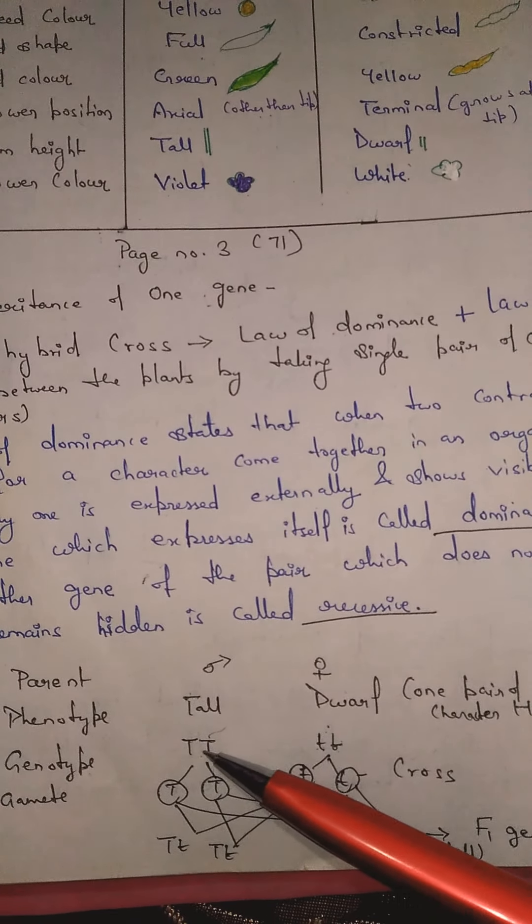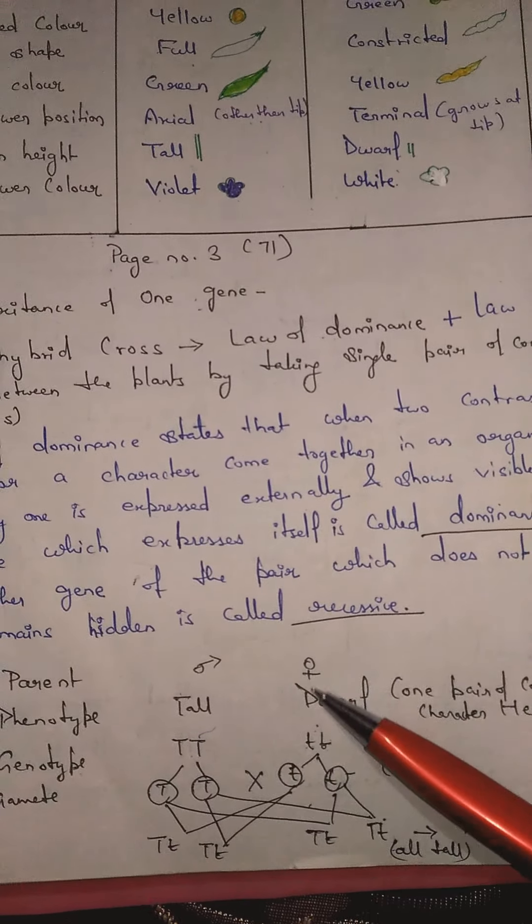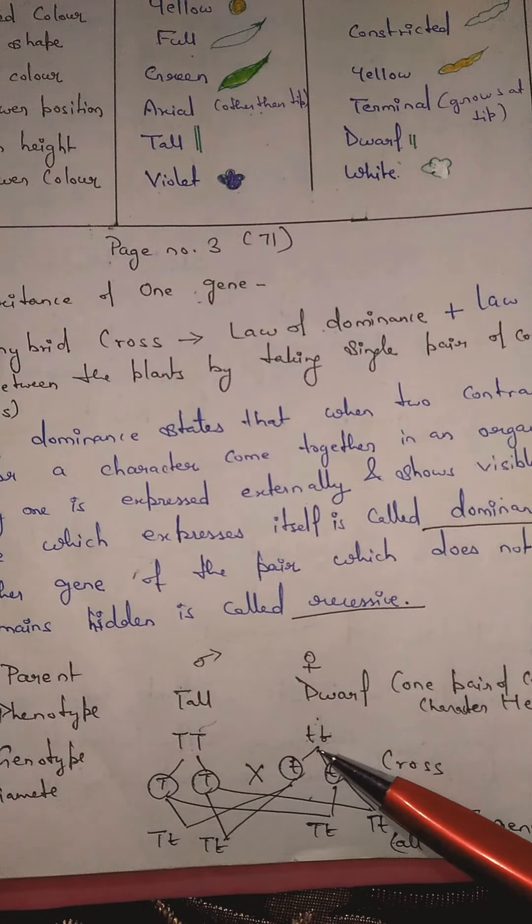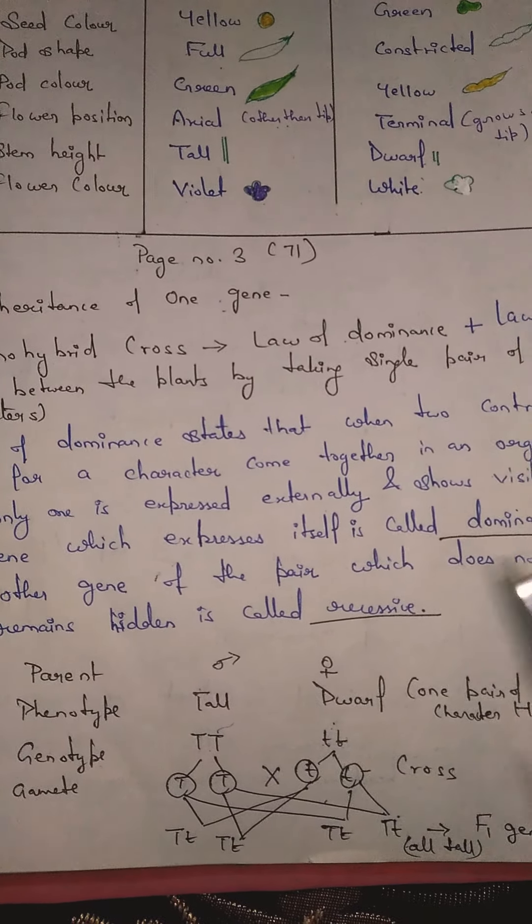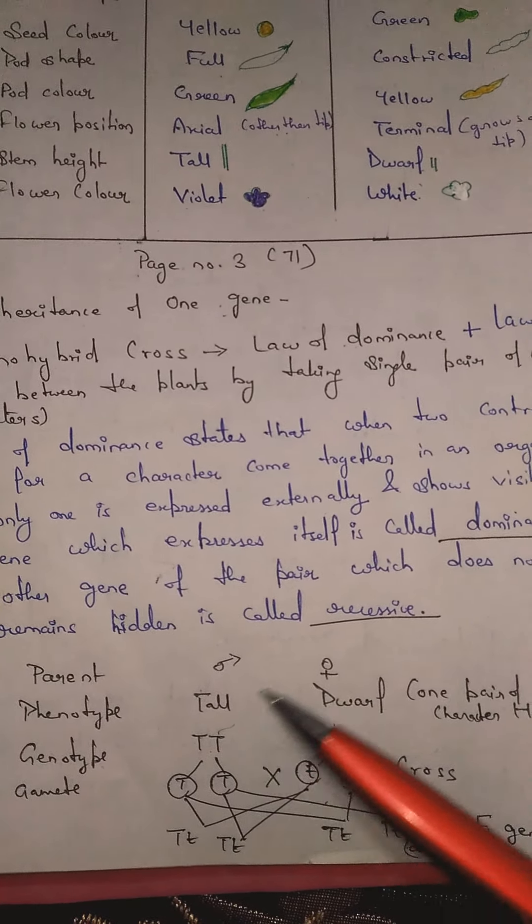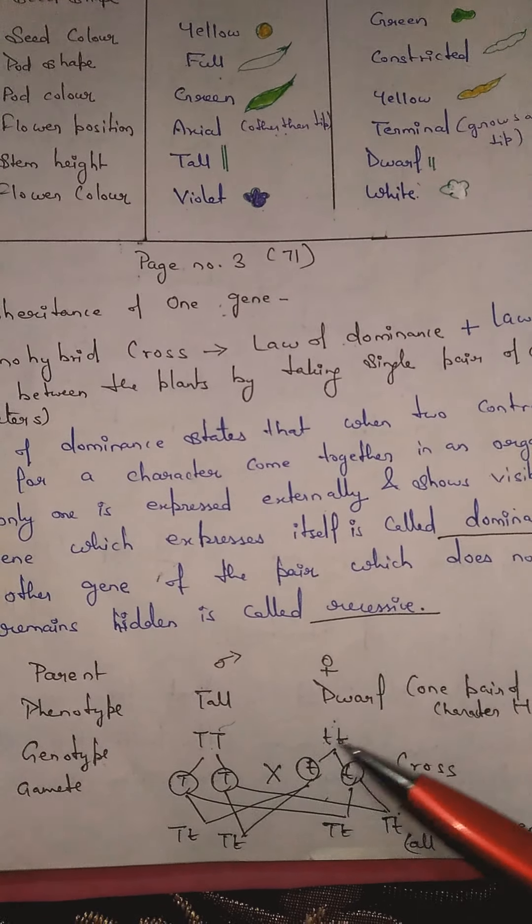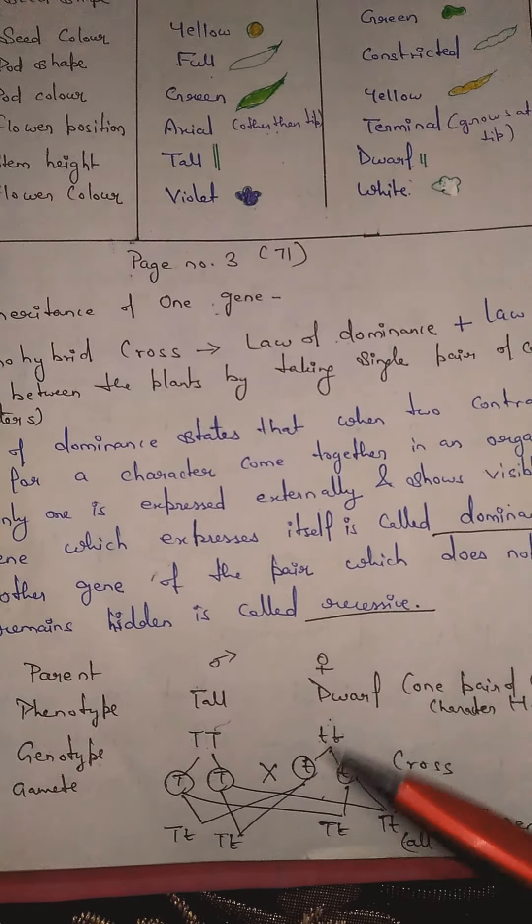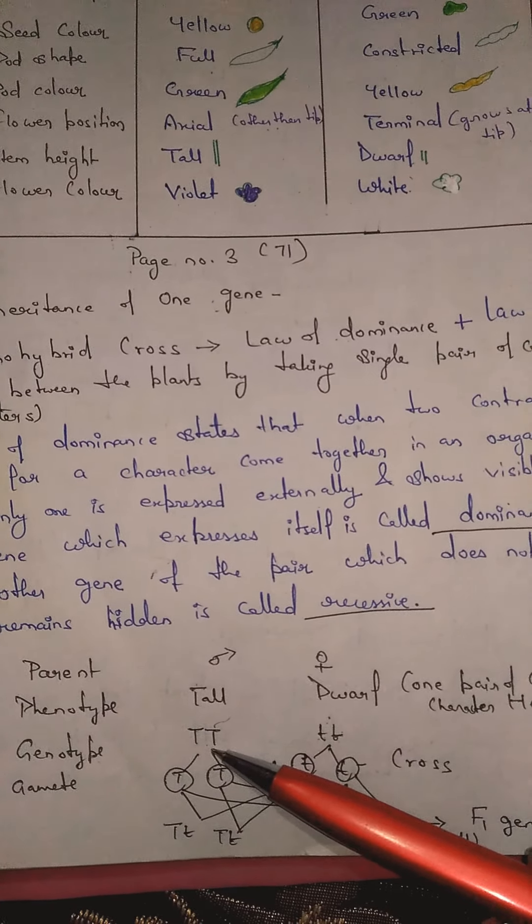So capital T is written here two times. When we write dwarf, we get confused. So in order to avoid any confusion and to make things smooth, what is the capital T? We will use small alphabet to represent the recessive. Capital T and the recessive will represent the first alphabet, that is the small alphabet - small t.